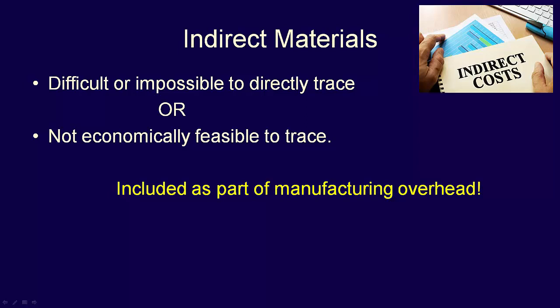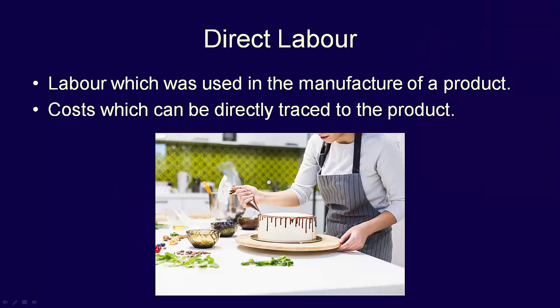Now let's move on to direct labour. This is the cost of the factory employees who convert the raw material into finished goods. For instance, the bakers in the bakery who make the cake, and the worker who decorates the cake and places it in the box ready for sale — all of these would be classified as direct labour.